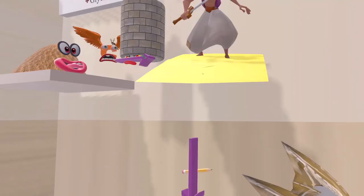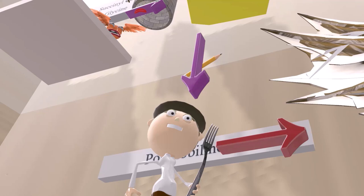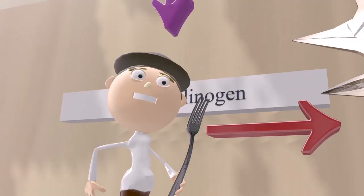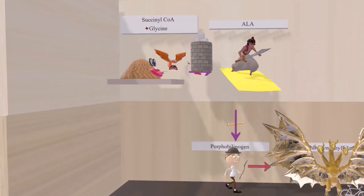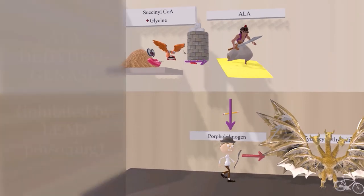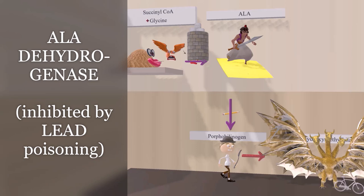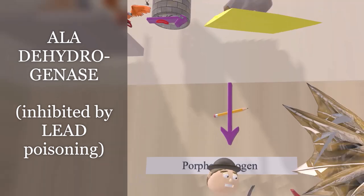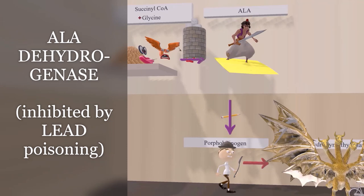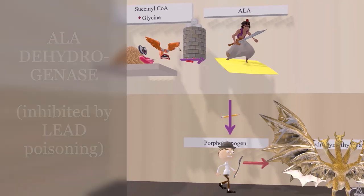Aladdin goes downward and turns into 'poor fork billy,' representing porphobilinogen. The second step of heme synthesis is when ALA is converted to porphobilinogen by the enzyme ALA dehydrogenase. A lead pencil here reminds us that lead inhibits this step — the conversion of ALA to porphobilinogen. Keep an eye out, as the lead pencil will come up again since lead also inhibits another step.